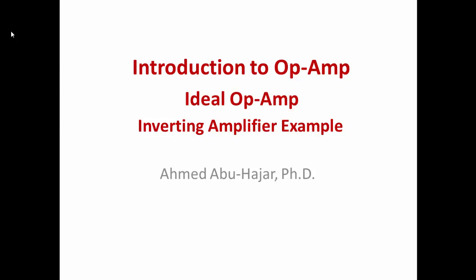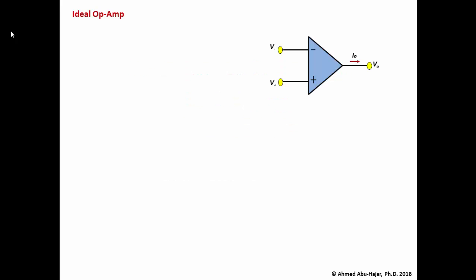Welcome folks, we are going to do an ideal op-amp example using the classical inverting amplifier circuit. To analyze any ideal op-amp circuit, we apply two conditions. The first condition states that the voltage at the inverting input, v minus, must equal the voltage at the non-inverting input, v plus. This is an extremely important condition.